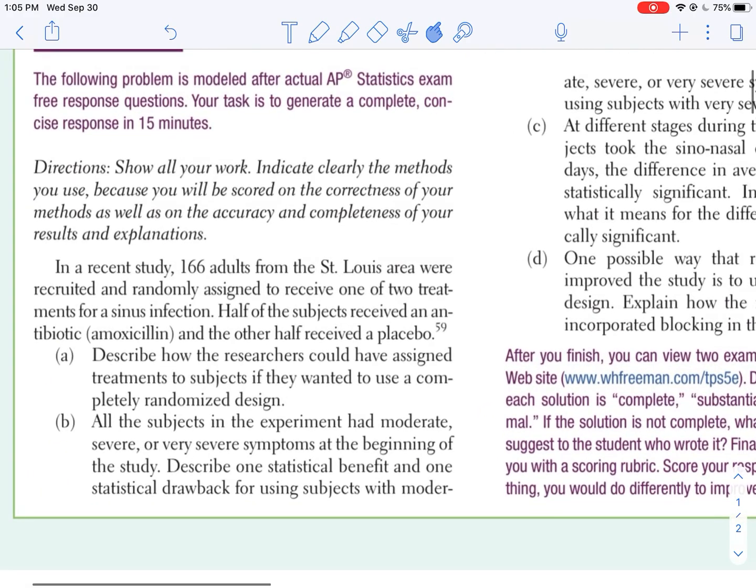So in this case you have 166 adults from the St. Louis area and they were recruited and randomly assigned to receive one of two treatments for a sinus infection. Half received an antibiotic and the other half received a placebo, and we had to answer some questions about that. The first one was describe how the researchers could have assigned treatments to subjects if they wanted to use a completely randomized design. Now remember with a completely randomized design, you take all of your subjects and then you randomly assign them a treatment, or in this case you assign them a treatment and placebo.